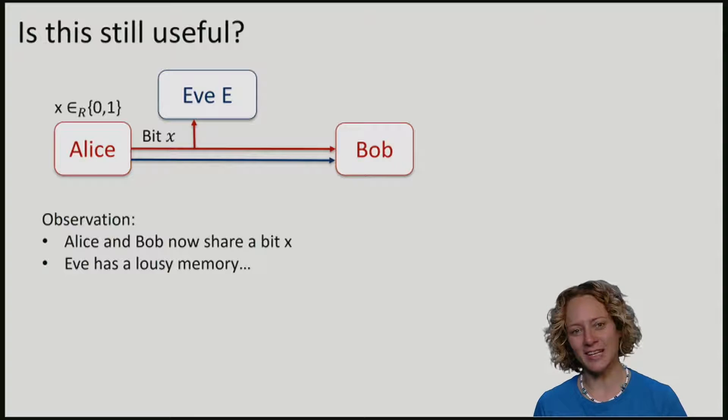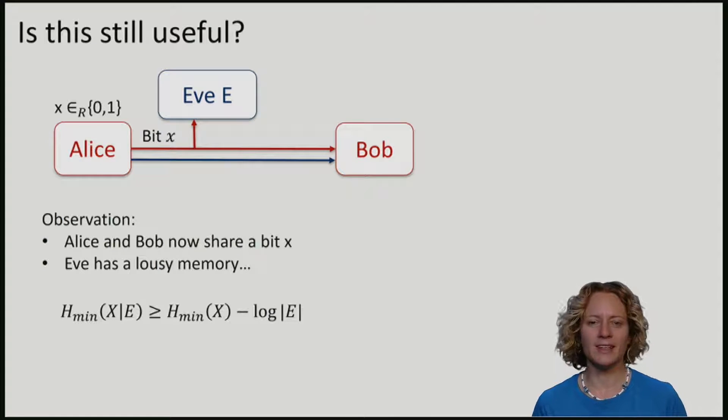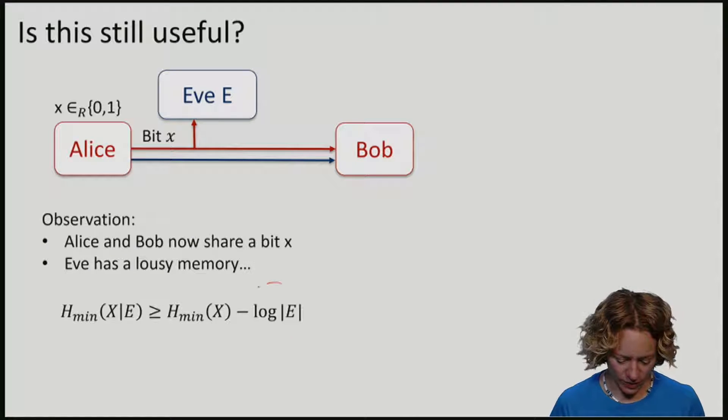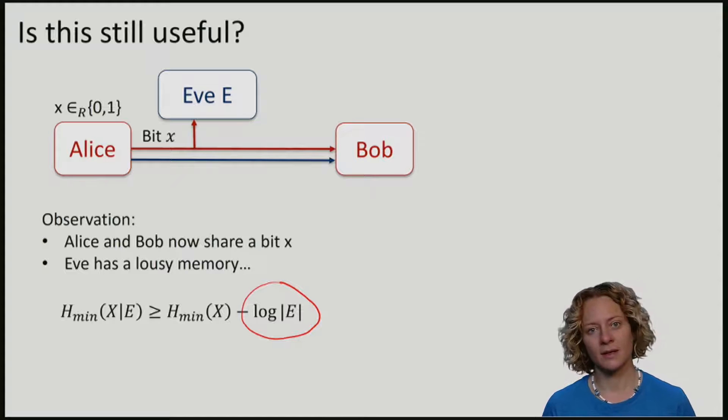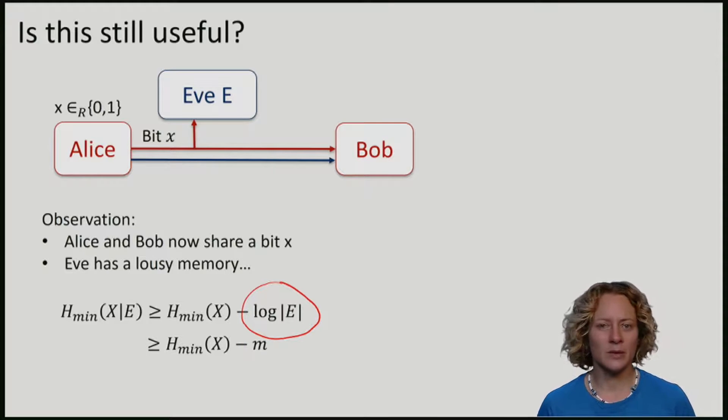Thankfully, we know that Eve has a lousy memory. In particular, remember by the property of the min entropy, we know that the min entropy of x given e is never smaller than the min entropy of just x minus the log of the dimension of e. In our case, this means that it's never larger than the min entropy of x minus m, where m is the number of bits that Eve can store.